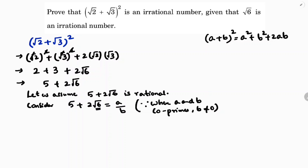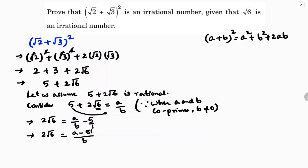We know the √6 part is irrational. So we isolate it: transpose 5 to the other side to get 2√6 = a/b − 5. Taking LCM on the right side gives 2√6 = (a − 5b)/b.